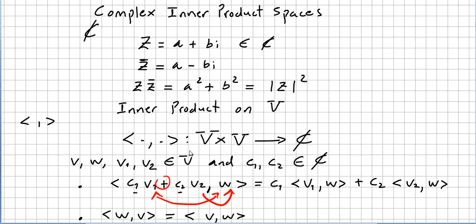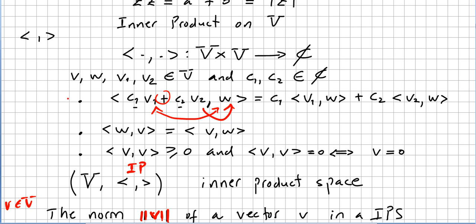An inner product is V times V mapped into the complex numbers where you have these three properties. Please check the previous video for this. And we saw that a vector space with an inner product is an inner product space.